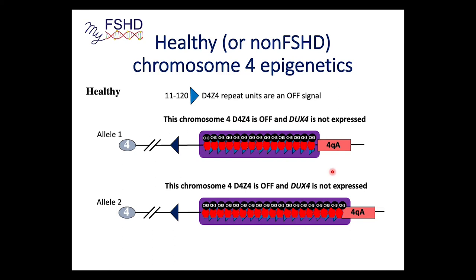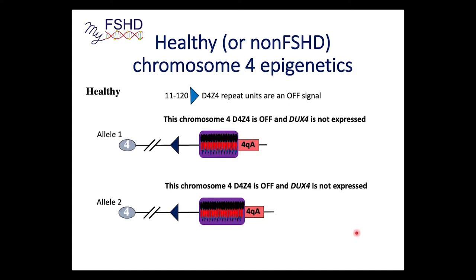This establishes an epigenetic environment that is not conducive to gene expression. The DUX4 gene — located in the last D4Z4 repeat unit near the 4A subtelomere — is methylated, off, in a bad environment, and becomes compacted. The slinky is pushed together and this is just off. So you're not going to get any pathogenic DUX4 gene expression from either chromosome 4 in the non-FSHD state.